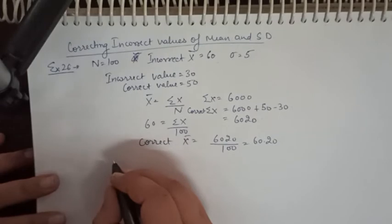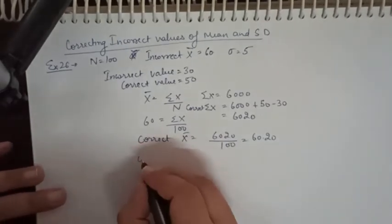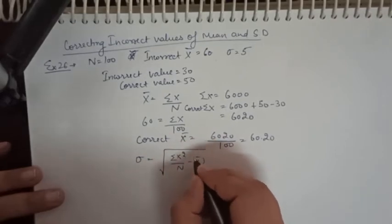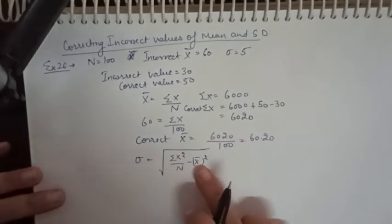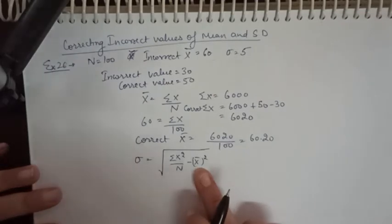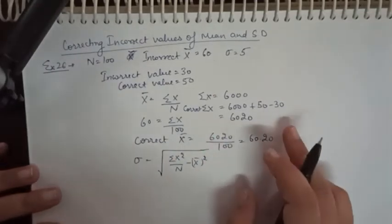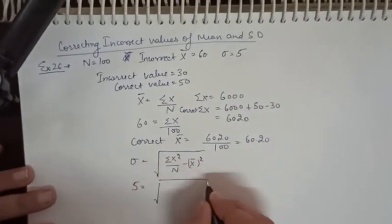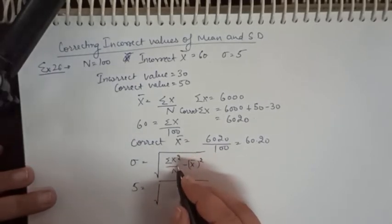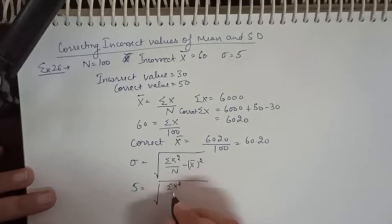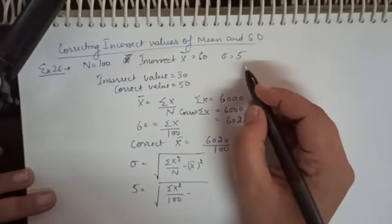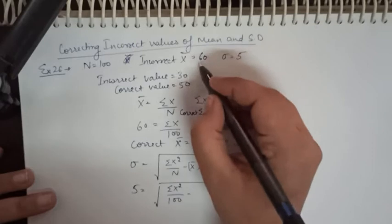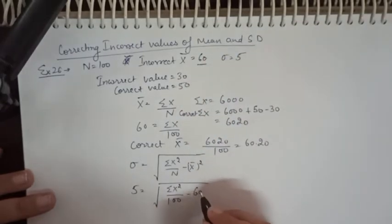Now I need to find the correct standard deviation. The incorrect standard deviation is 5. Using the formula: SD² = (Σx²/n) − mean², we have the incorrect standard deviation of 5 and the incorrect mean of 60 squared.